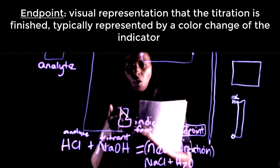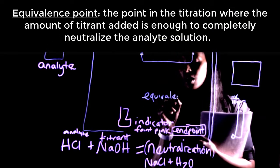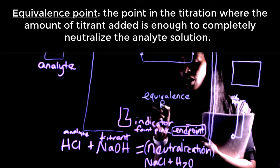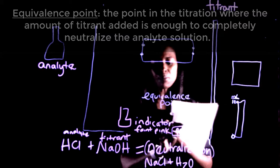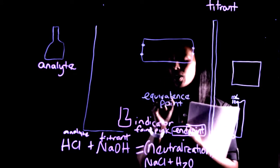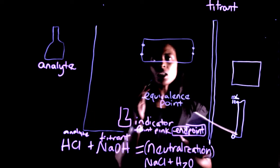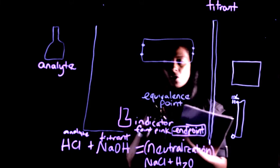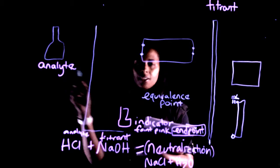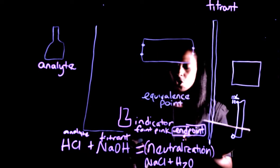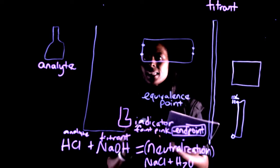Another term you will often hear is the equivalence point. Don't confuse it with the end point, even though they are similar and both happen at the end of the reaction. The end point you can visualize — the faint pink color. The equivalence point you cannot visualize; it is more abstract, referring to when the number of equivalents of base equals the number of equivalents of acid. The key terms are: analyte, titrant, neutralization, end point, equivalence point, and the overall process is called a titration.